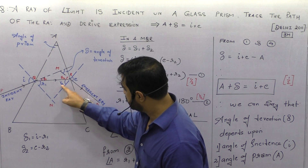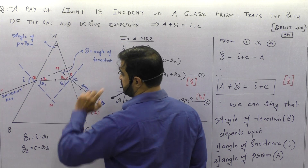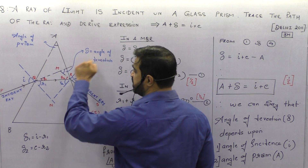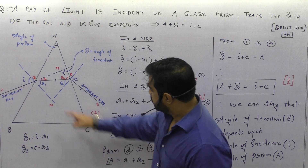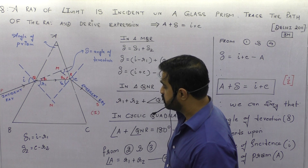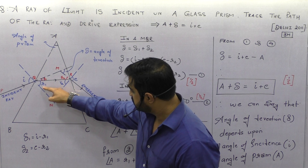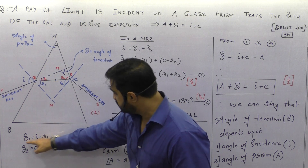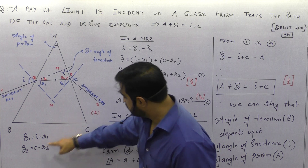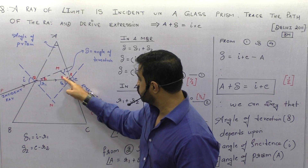These are the two angles of refraction at the first and second faces. The incident ray went straight, the emergent ray bent by this much, so the total bending is angle of deviation delta. Let delta1 be the deviation at the first face and delta2 at the second face. So delta1 equals i minus r1, and delta2 equals e minus r2.